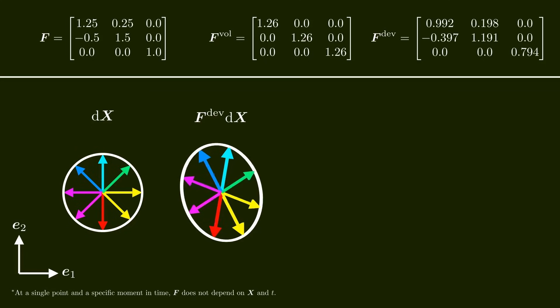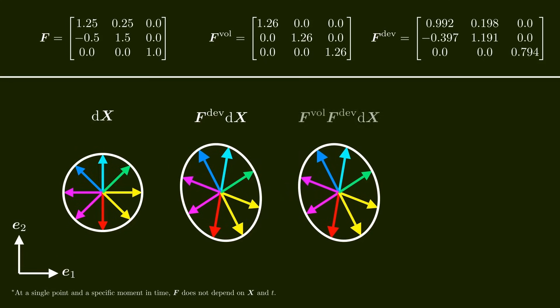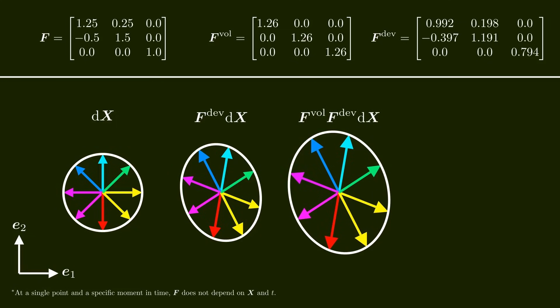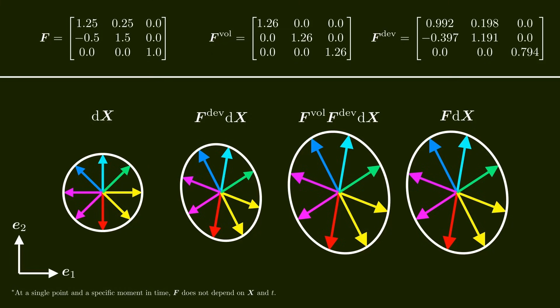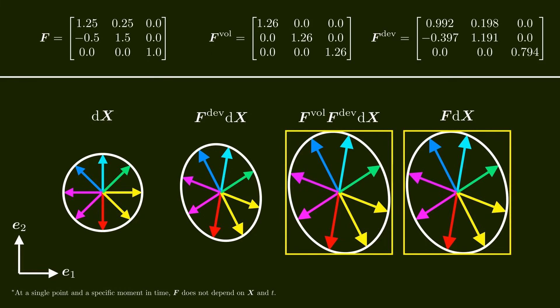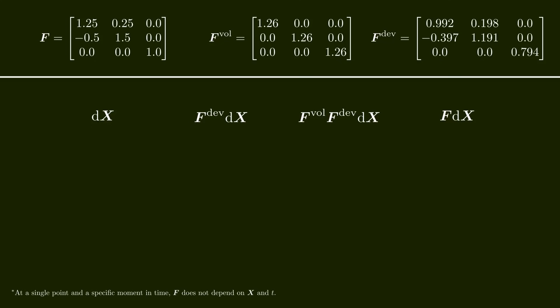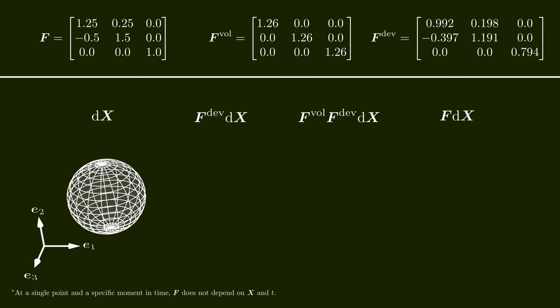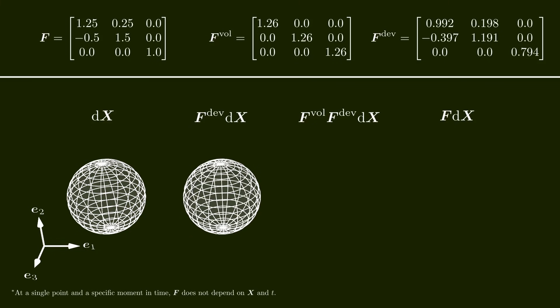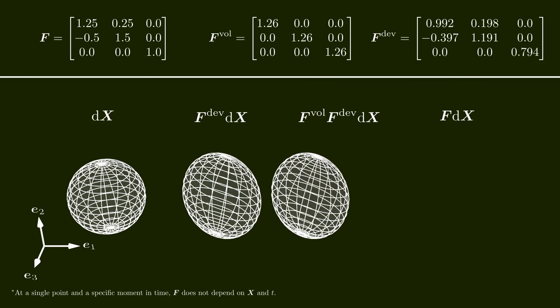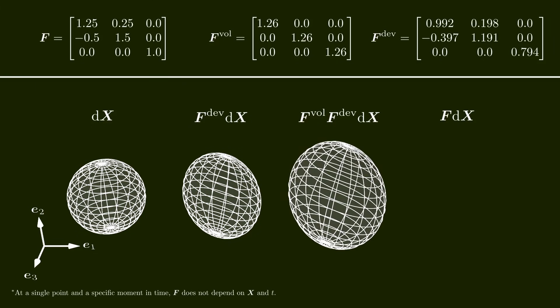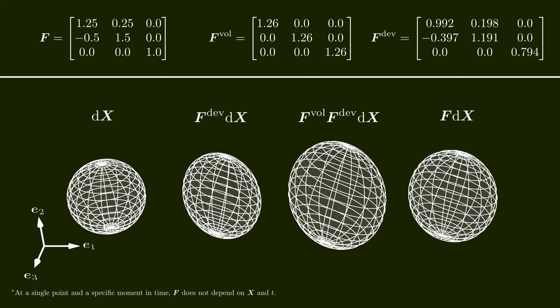After multiplying the deviatoric part of F with the line elements, we multiply the volumetric part of F with the result. We observe that the volume changes while the shape remains unchanged. Finally, we can see that F multiplied with the undeformed line elements yields the same result as multiplying first the deviatoric and then the volumetric part. We can also visualize this in 3D: the deviatoric part of F changes the shape of the sphere without changing its volume, and the volumetric part of F changes the volume without changing the shape, giving the same result as directly multiplying F.